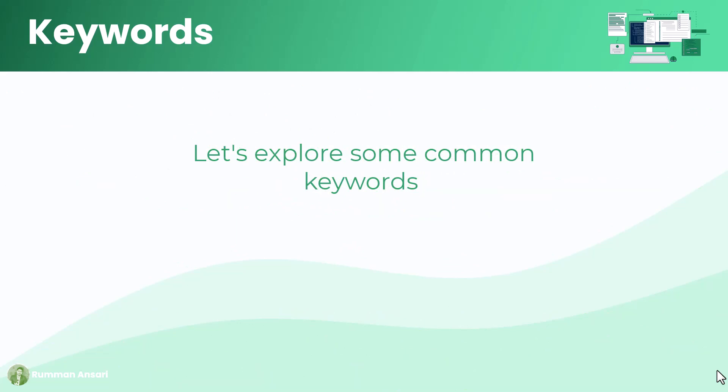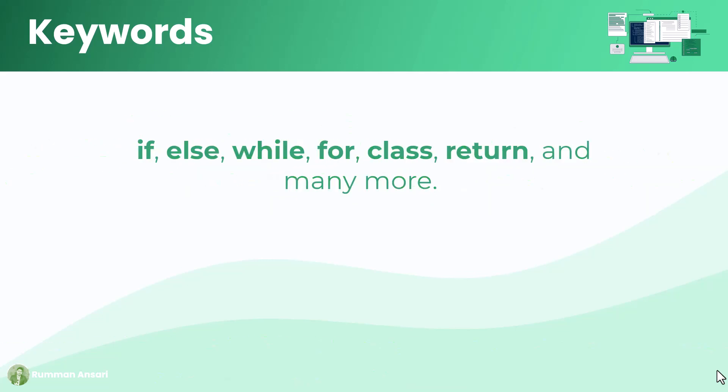Now let's take an example of common keywords. Let's explore some common keywords that you will encounter across various programming languages. These keywords include words like if, else, while, for, class, return, break, and many more. Each programming language has its own set of keywords, and each keyword serves a unique role in controlling the flow and behavior of your code.